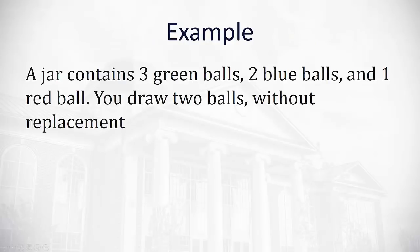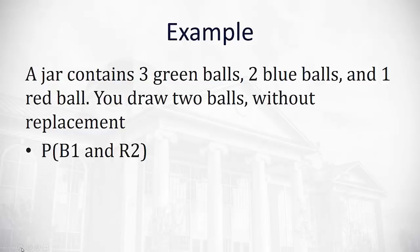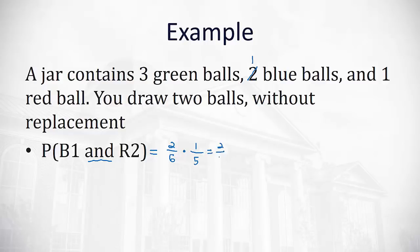A jar contains three green balls, two blue balls, and one red ball. Drawing two balls without replacement, what's the probability of blue on the first draw and red on the second? Using the AND formula: the probability of blue first is 2 out of 6, multiplied by the probability of red second given blue was drawn, which is 1 out of 5. That gives 2 out of 30, or 0.0667.